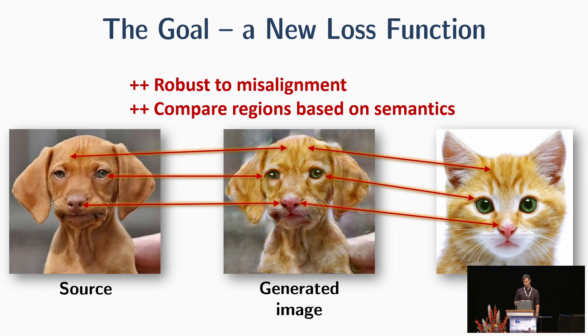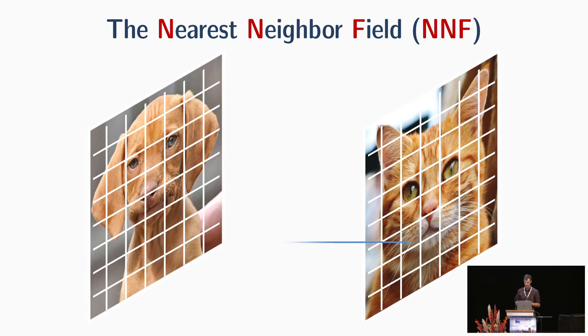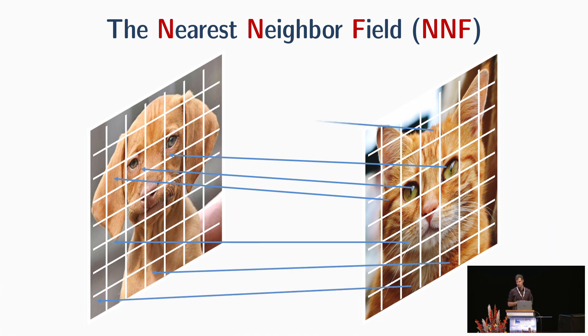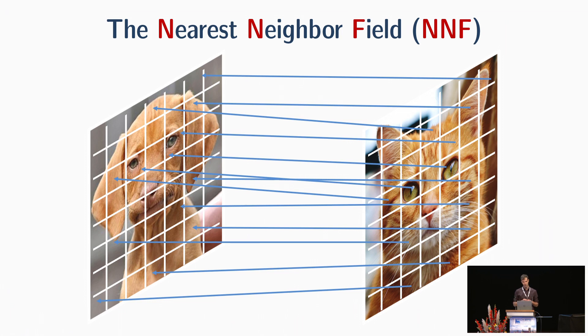Our goal is to design a new loss function that will be robust to this misalignment, such that it will be able to compare regions based on semantic information. To avoid the need of the geometric alignment, we find for each pixel in one image, its match pixel in the second image.